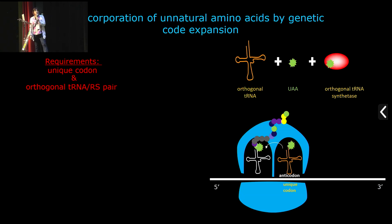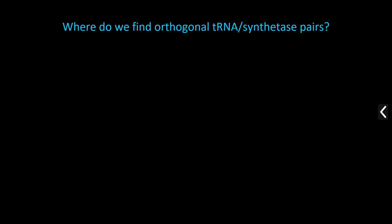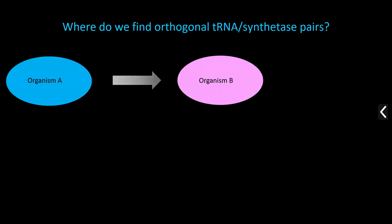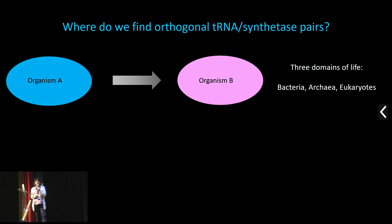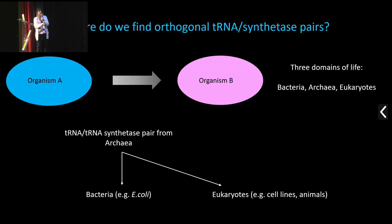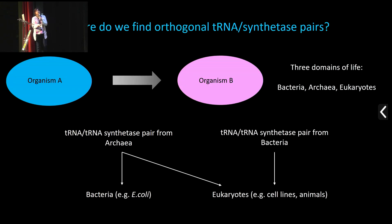Now we want to introduce something unnatural — which as such doesn't exist in nature — so we need to expand this genetic code by introducing additional components. We need a tRNA specific for the unnatural amino acid, assign one codon for its incorporation, and have a tRNA synthetase specific for this unnatural amino acid. These orthogonal tRNA and tRNA synthetase pairs are usually borrowed from different organisms. Pairs from archaea can be introduced in bacteria and eukaryotes — they work there but remain orthogonal, not interfering with the endogenous translational machinery.